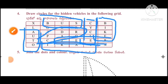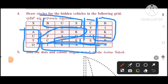Draw circles for the hidden vehicles in the following word search. First one: bike. Next: auto. Train. Jeep. Next, in this direction: car. Next, in this direction: cycle. Bus.